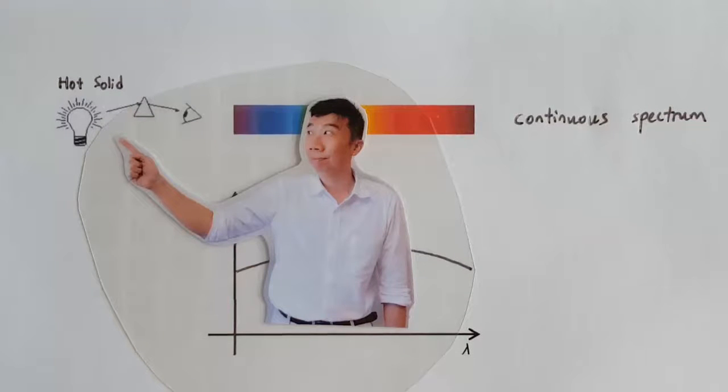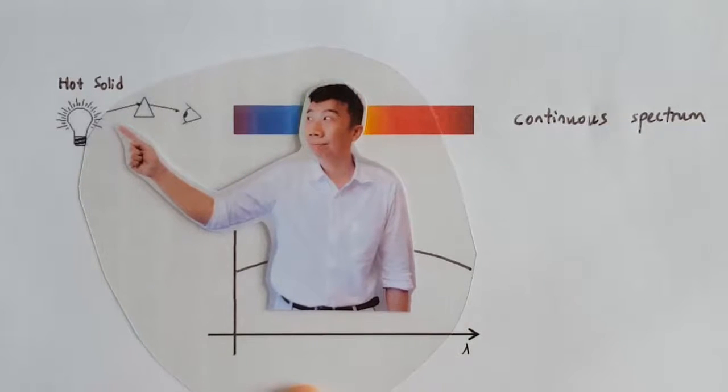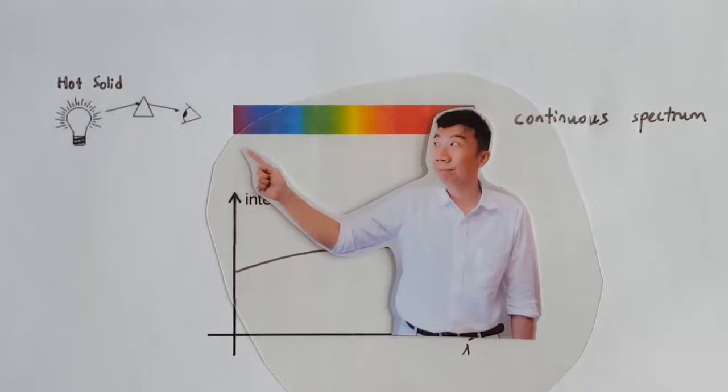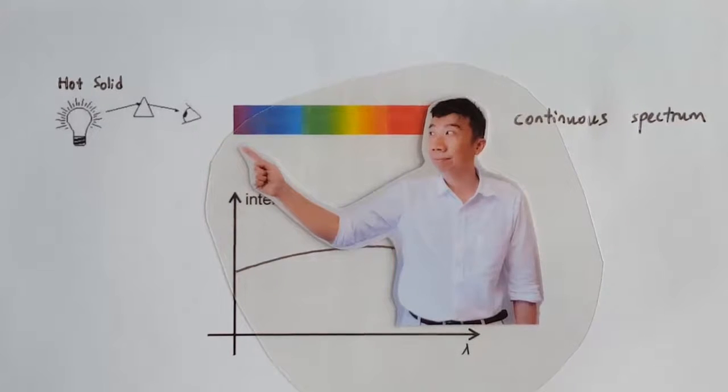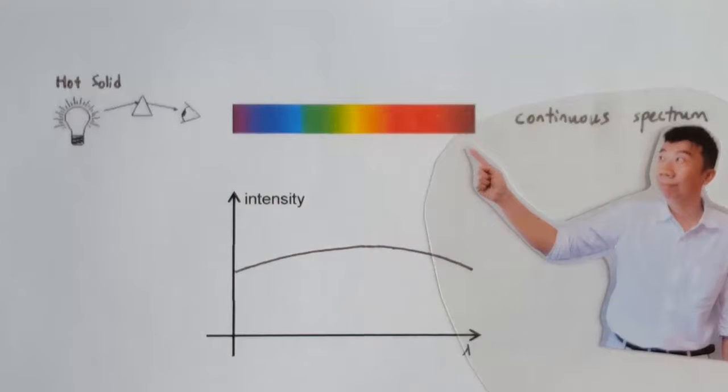A hot solid, such as the filament in a light bulb, emits light when it's hot. If you study the spectrum of the light given off by a hot solid, you will see a continuous spectrum, from the bluest blue to the redest red. All the wavelengths are present.